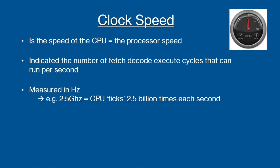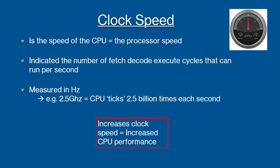For example, a processor might have a clock speed of 2.5 GHz, which means that 2.5 billion instructions are fetched, decoded and executed per second.